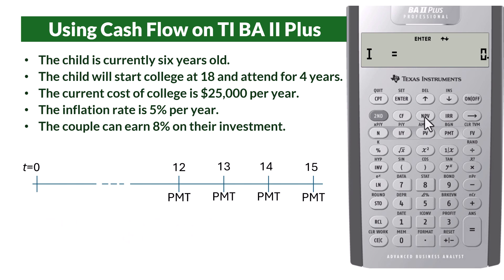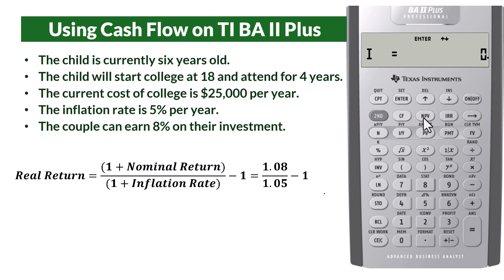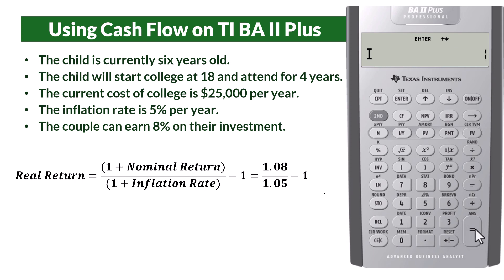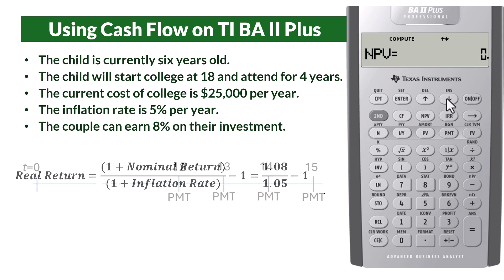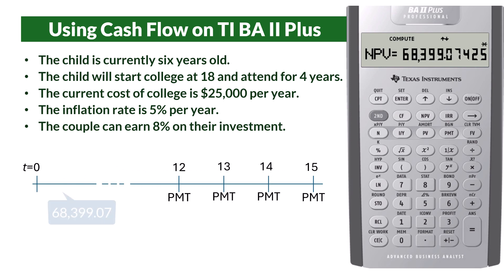Next, press the NPV button. For the discount rate, we must use the real or inflation-adjusted rate — that is, 1.08 divided by 1.05, then subtract 1, and since this has to be entered as a percent, multiply by 100. Enter, then scroll down and compute NPV, which gives $68,399. That's the amount we saw earlier that we should invest today.